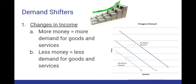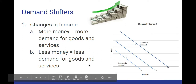The first demand shifter is called changes in income, and this one's probably the most simple and straightforward. If you make more money — you get a promotion, a raise, or a new job that pays more — you have more money, so you're going to be buying more things. You have more demand for goods and services. More money equals more demand. Likewise, if you lose your job or take a lower-paying job or are temporarily laid off, less money equals less demand for goods and services.